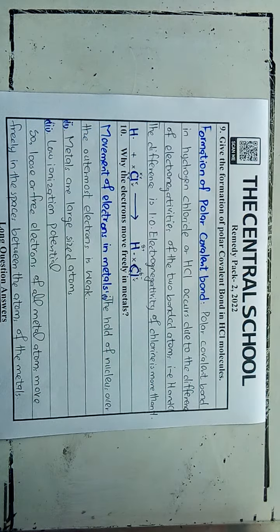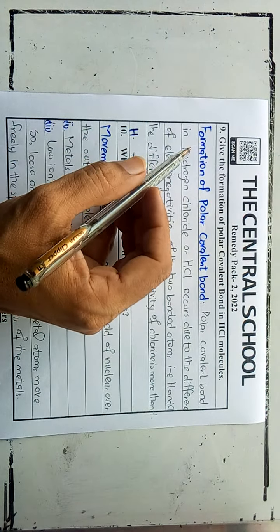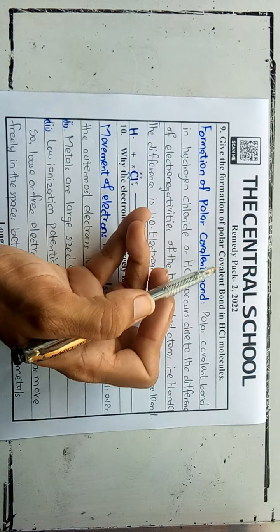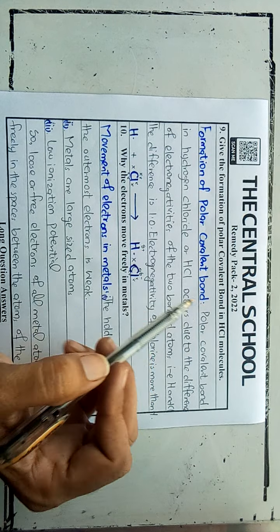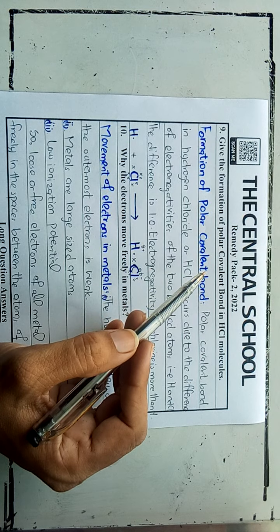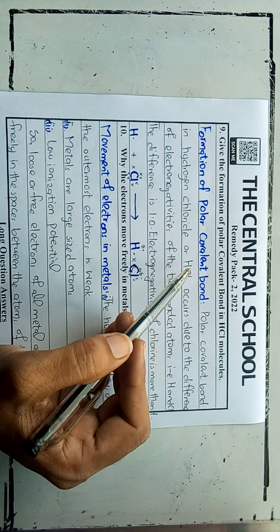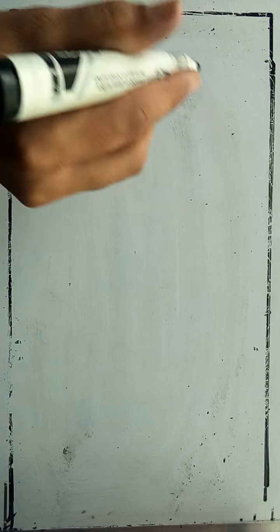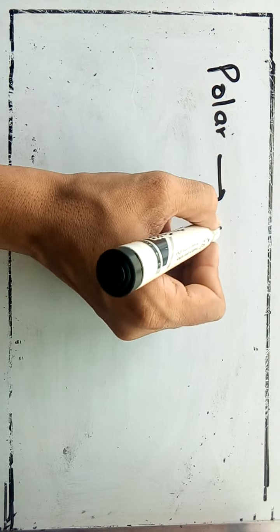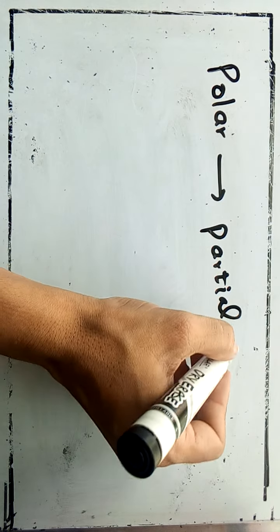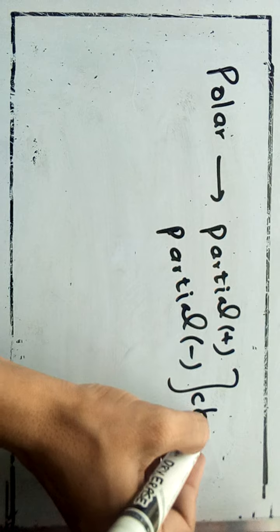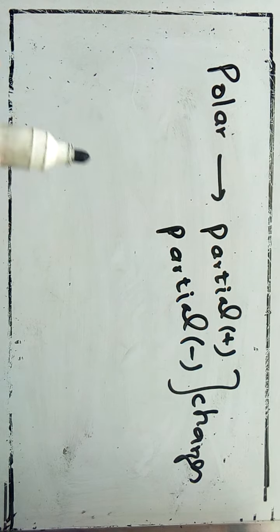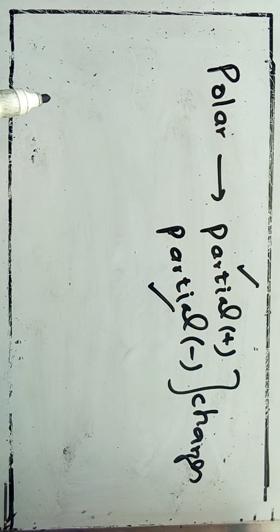Number nine, on page 19 of your remedy pack: give the formation of the polar covalent bond in HCl molecules. Polar covalent bond means the covalent bond which is polar in nature. Polar means having partial positive and partial negative charges. On the basis of the partial positive and partial negative charges, the covalent bond becomes polar.